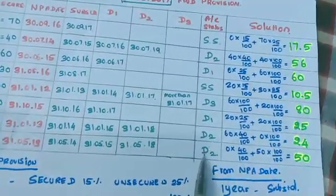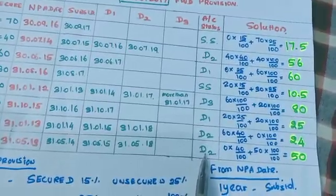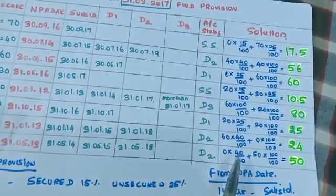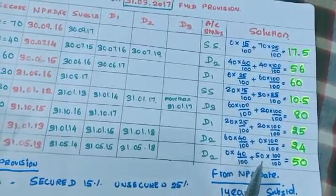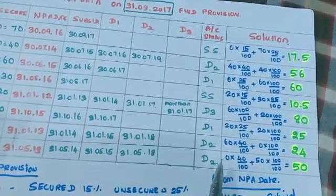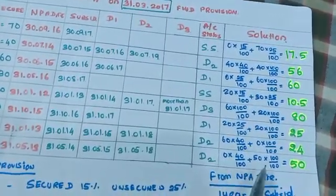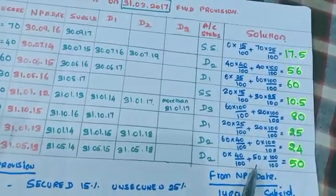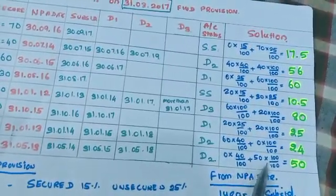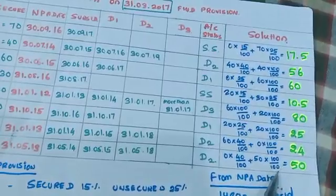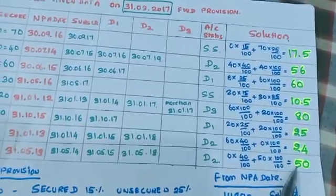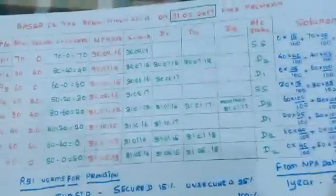The next account A8 is in D2 category. The provisioning norms for D2 are: secured portion 40% and unsecured portion 100%. In our problem, the secured portion is 0 and unsecured portion is 50. So 0 × 40/100 plus 50 × 100/100 equals 50. This is the provisioning for A8.